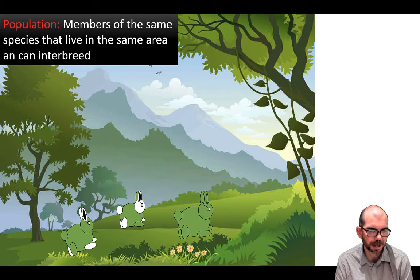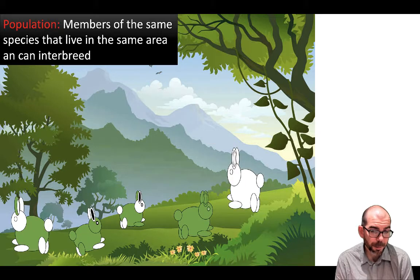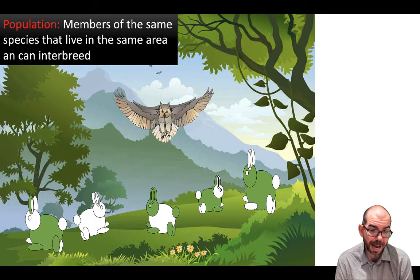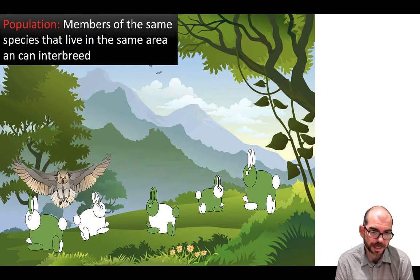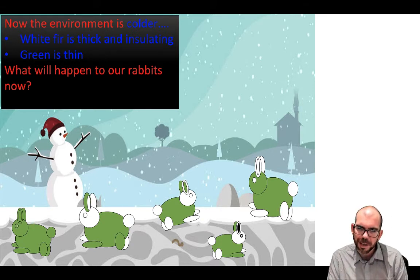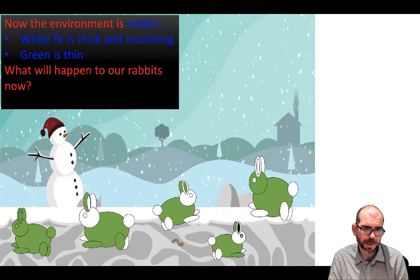They were able to avoid getting eaten by the owl. What's going to happen when this population reproduces? Well, we're probably going to see fewer white bunnies. That trait is still there — we still have green and white bunnies that will have offspring that are white. But the owl is still hungry and will continue to eat the ones that are easiest for it to see. But seasons change. The environment is getting colder. Turns out that white fur is thicker and helps survive in the cold, whereas the green fur, even though it helps you blend into a green environment, is rather thin.